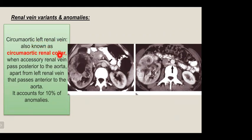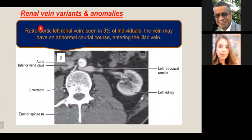Regarding renal venous variants, there is a condition called circumaortic left renal vein, also known as circumaortic renal collar, where an accessory renal vein passes posterior to the aorta in addition to the main left renal vein that passes anteriorly. This accounts for 10 percent of venous anomalies. Another variant is retro-aortic left renal vein, seen in 3 percent of individuals, where the vein passes entirely behind the aorta and may have an abnormal caudal course entering the iliac vein.